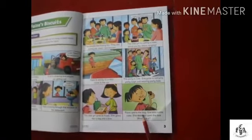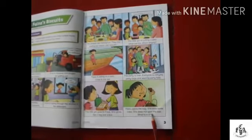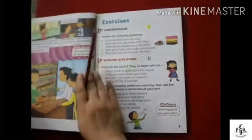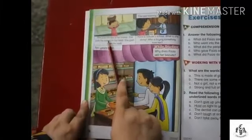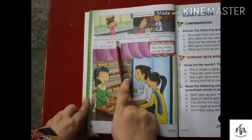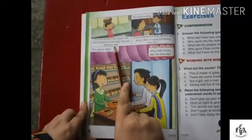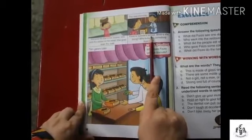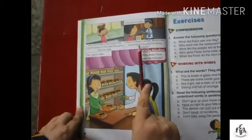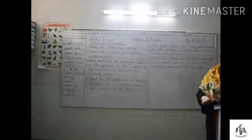She gives Fiza a bag and a box. Fiza opens the bag. She eats some cake. She does not open the box. What is in it? She puts the box in her basket. She puts the basket on her head. She goes down the road. Fiza is outside the school. What is she doing? Who is buying something from her?